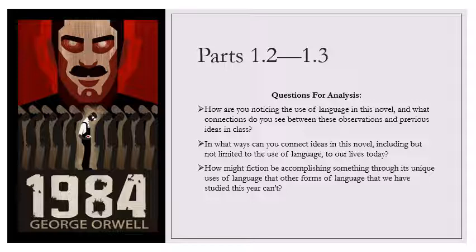Chapter one, part two. As he put his hand to the doorknob, Winston saw that he had left the diary open on the table. Down with big brother was written all over it in letters almost big enough to be legible across the room. It was an inconceivably stupid thing to have done.